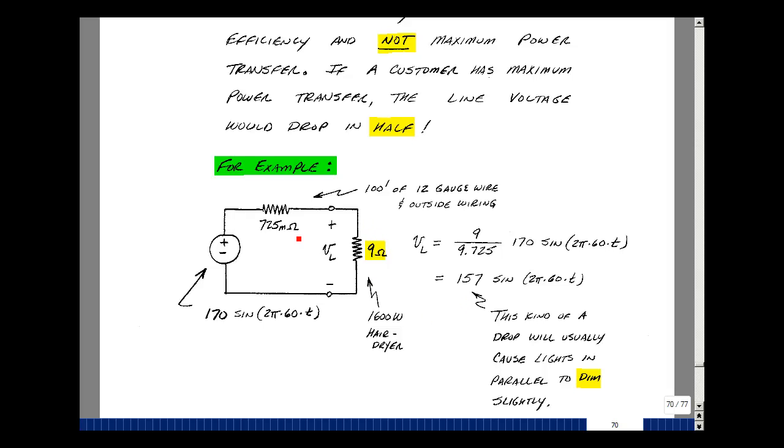But if you were to match this to here, you would drop the voltage in half. And again, you wouldn't want to do that in an appliance. Just some of the ideas related to maximum efficiency.